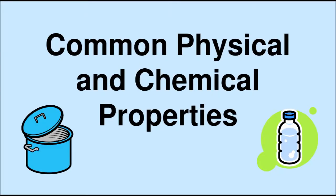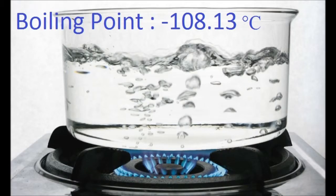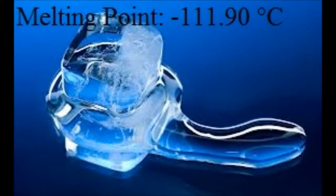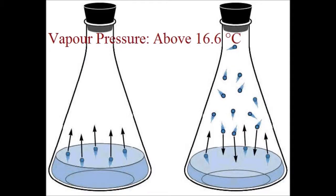Chemical and Physical Properties of Xenon. Xenon has a boiling point of negative 108.13 degrees Celsius, a melting point of negative 111.90 degrees Celsius, and a vapor pressure above 16.6 degrees Celsius.